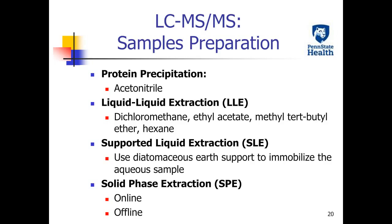The first step of LC tandem mass spectrometry is sample preparation. Many methods are available, including protein precipitation, liquid-liquid extraction, supported-liquid extraction, and solid-phase extraction. For example, you can use acetonitrile to precipitate proteins. Many solvents can be used for liquid-liquid extraction, such as dichloromethane, ethyl acetate, methyl tert-butyl ether, and hexane.